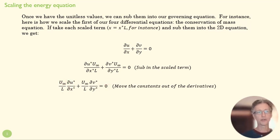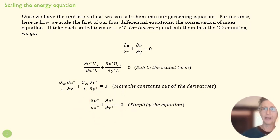In this case, it works really nice because we've got a zero over here. We can just do some rearrangement algebraically. We're going to divide both sides by U infinity and multiply both sides by L. So we get rid of those constants, and we have a nice simplified equation for the conservation of mass.